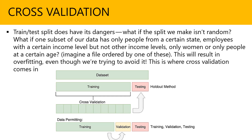Look at the image here — you have the dataset on top, you have the training, then you cross-validate using the holdout method in testing, and then you do data permitting with training, validation, and testing. Just understand the concept of cross-validation, and be aware that the test and train splitting of data has its own dangers.